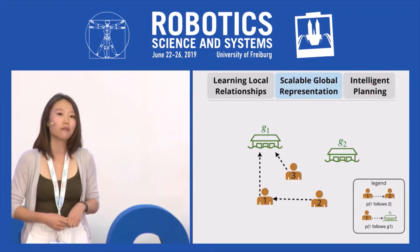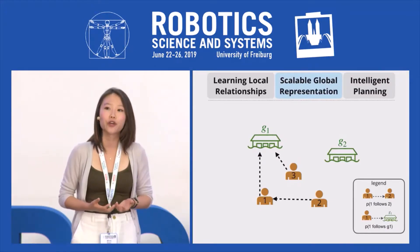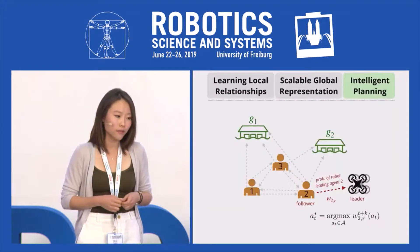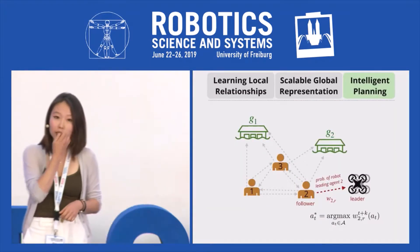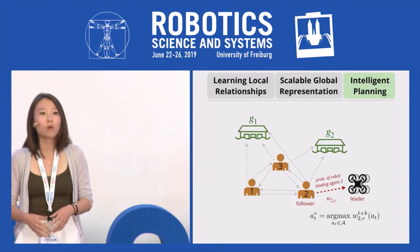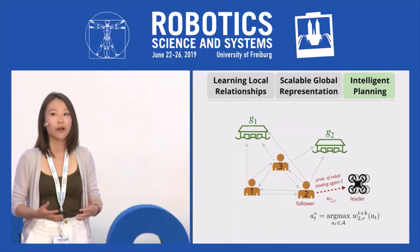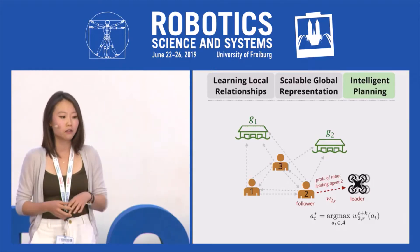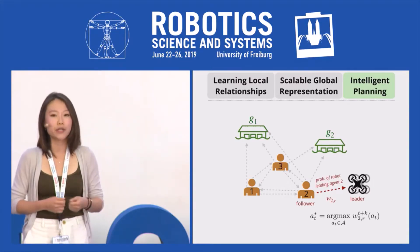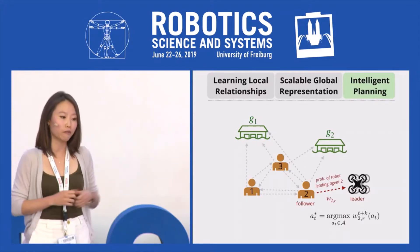Now that we have this graph representation of leading and following structures, you might wonder how this is useful for our robots. In order to create robot policies, we compute this graph every k time steps. The robot then chooses actions that maximize a reward function defined by the weights in the graph. For instance, if you want an agent to follow the robot, the robot will choose actions that maximize the probability of it leading the agent, as shown by the red edge.